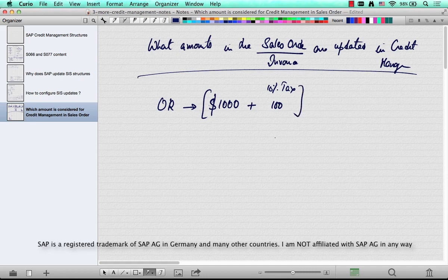Now, what is the credit price? Meaning, should this amount be considered for credit, or this amount, or the total of $1,100? What is the credit price?